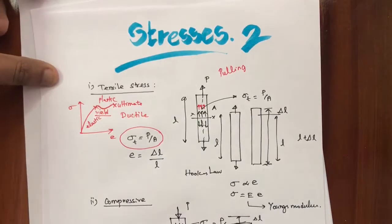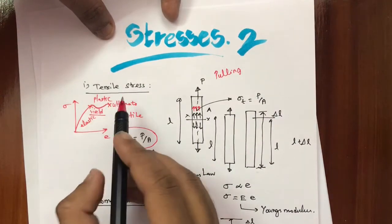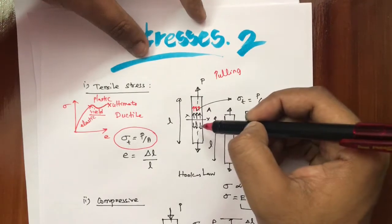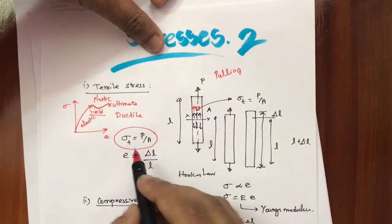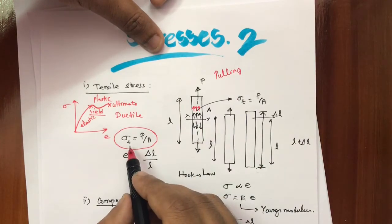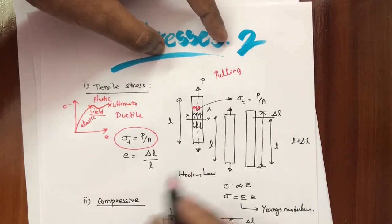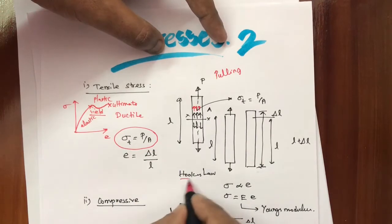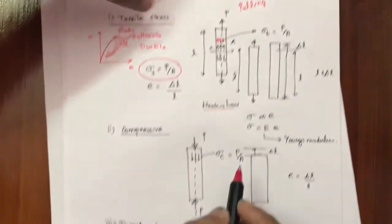When we apply the load along the axis in a pulling manner, stress is generated inside the element — that is tensile stress, which is load divided by area. Due to elongation, some strain will be there: strain equals change in length divided by original length. By Hooke's Law, stress is directly proportional to strain.